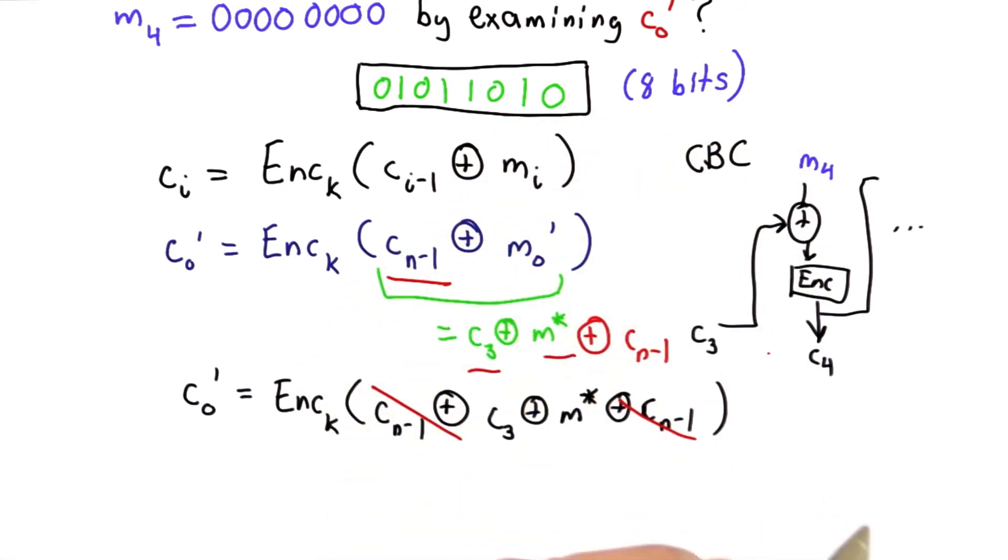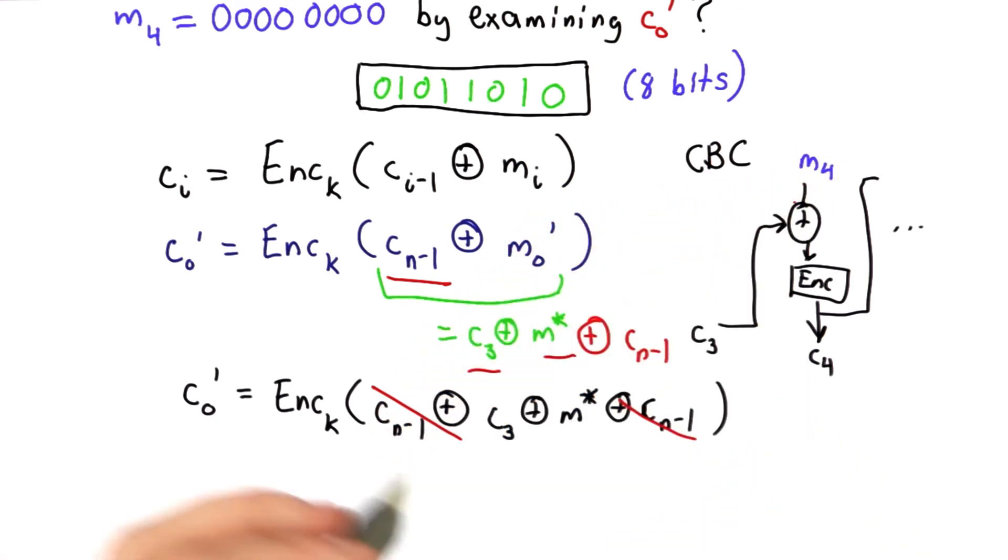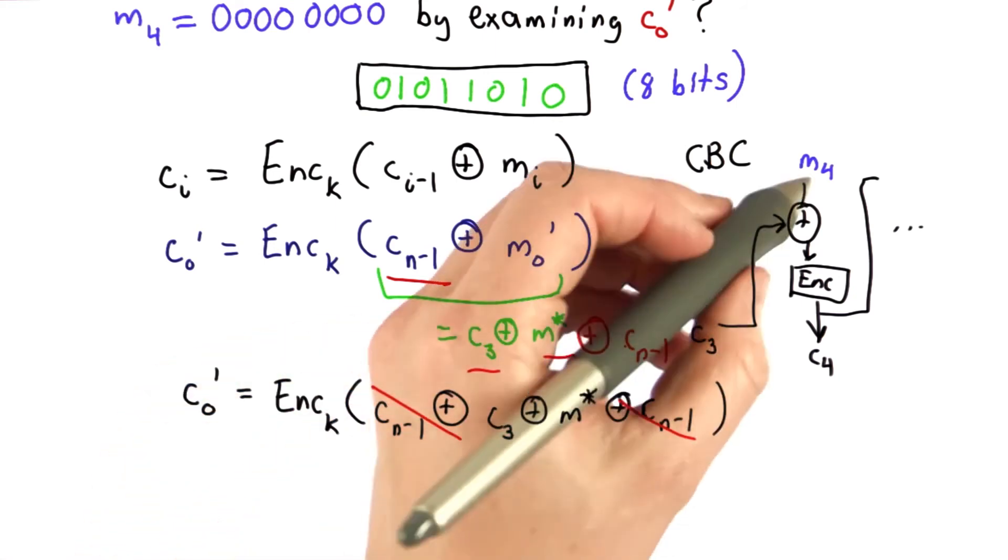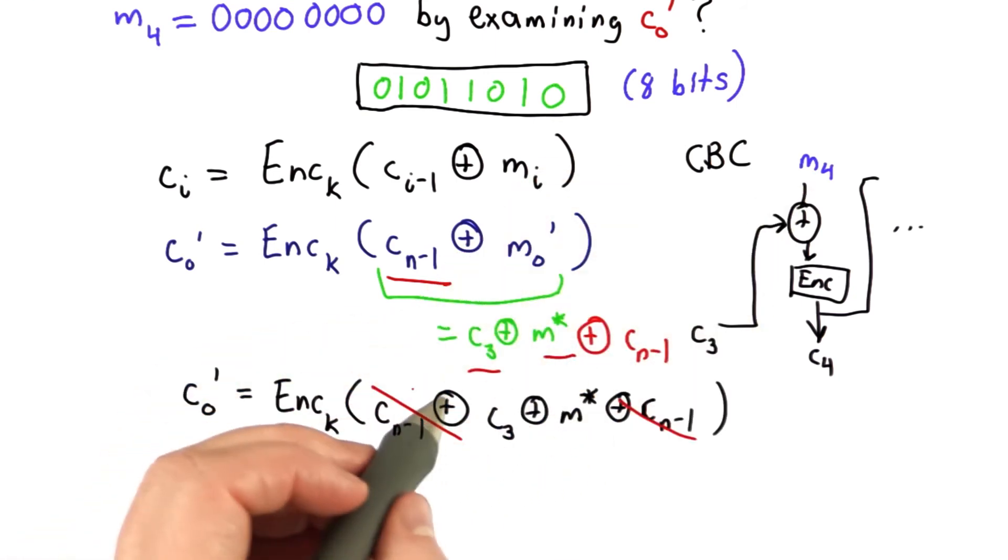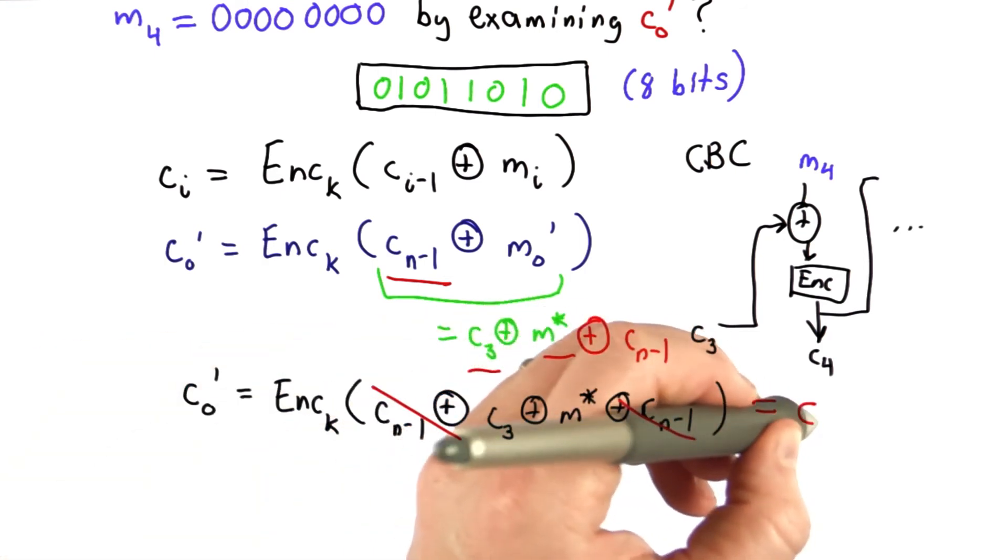That's the same as we were doing here. That's encrypting m4, xord with C3. We know what C3 is, so we could construct this message to pass in. We don't know what m4 is, but we know if this result is the same, then this should be the same as ciphertext block 4.